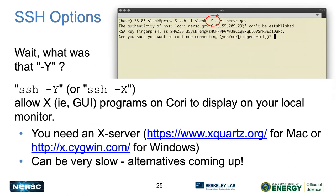The ssh -Y option (or -X) allows X programs — the Linux GUI system — to run and display on your local screen. Because Cori is remote, X is the protocol that lets applications like MATLAB draw windows on your local display. For this to work you need an X server on your laptop: XQuartz is good on Mac, and Cygwin works on Windows. However, if you're on a slow network this can be painfully slow.